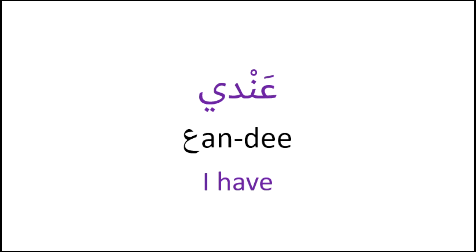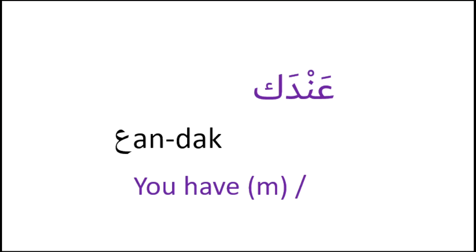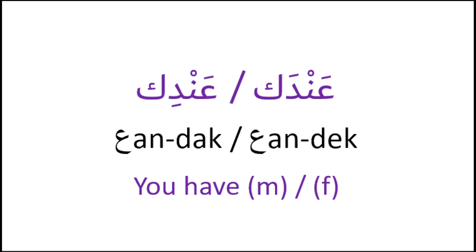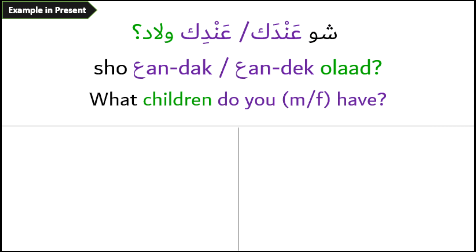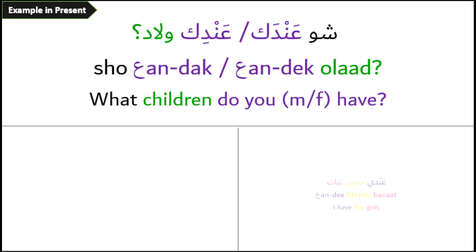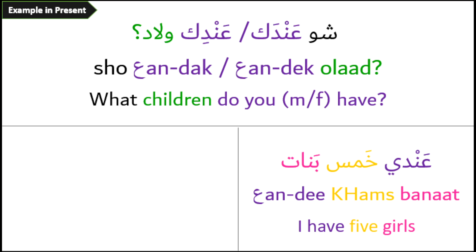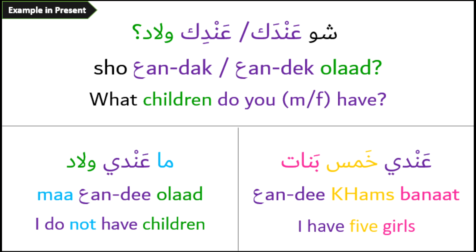عندي – I have. Example: أنا عندي بنت وصبي – I have a girl and a boy. عندك (to a man) / عندك (to a woman) – you have. Example: شو عندك ولاد؟ – What children do you have? The reply: عندي خمس بنات – I have five girls. Or to negate: ما عندي ولاد – I do not have children.